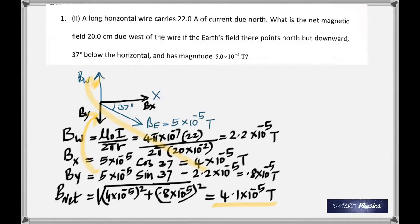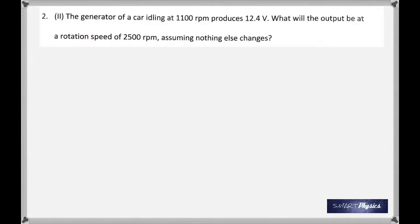You can see that I've already taken the resultant along the y-axis, one minus the other. Once you get that, you find the resultant by using the Pythagorean theorem, sum of the squares and take the square root, which gives 4.1 times 10 to the negative 5 Tesla.